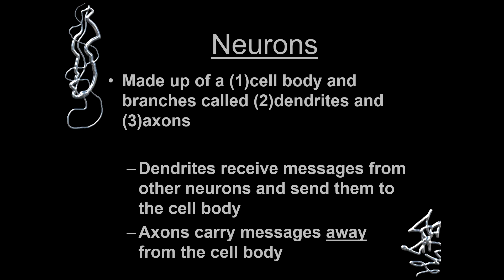As we discussed, the neuron is a cell body. It is made up of a cell body and branches called dendrites and axons. Dendrites receive messages from other neurons and send them to the cell body, while axons carry messages away from the cell body.